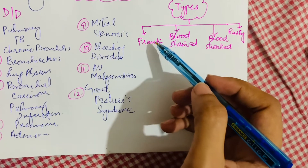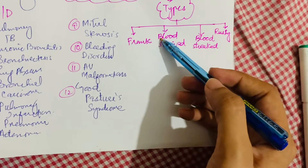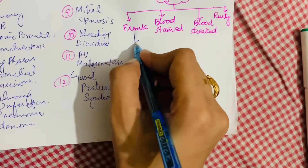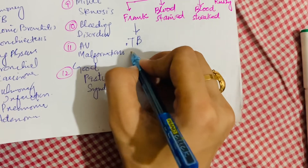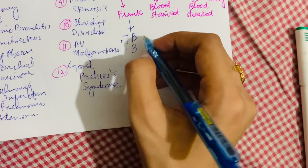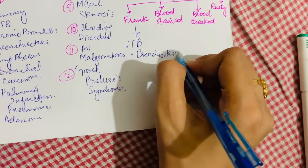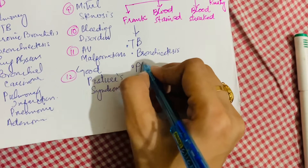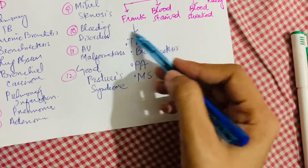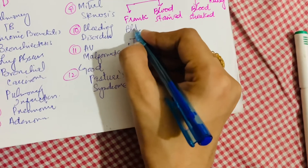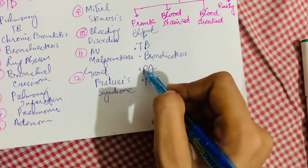In frank hemoptysis, the material coughed up is wholly blood. It is most commonly seen in tuberculosis, bronchiectasis, pulmonary embolism, and mitral stenosis.